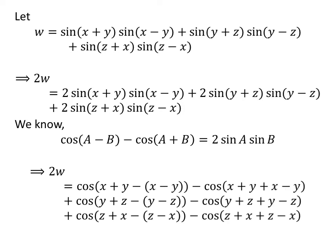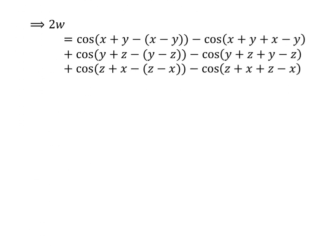Let us apply the above identity in our equation. We replace 2 sin(x + y) sin(x - y) by cos(x + y - (x - y)) - cos(x + y + x - y). Similarly, for the other two terms, we replace the same thing.